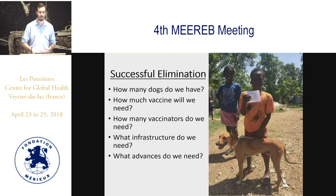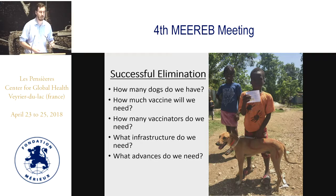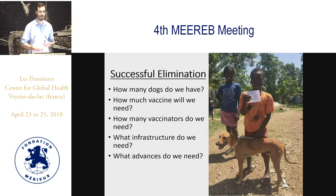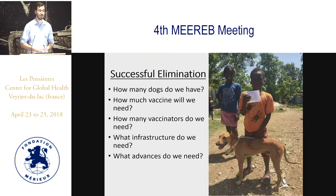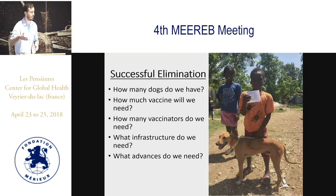We've heard it time and again from different countries that they purchase 100,000 doses of vaccine. Why? Well, that's because that's how much they buy every year. That's not based on any facts or figures about their dog population or about reaching that 70% coverage. How many vaccinators do we need? This is the human resource component also. We need to buy the vaccine, but how is that vaccine going to get into the animals? We need vaccinators on the ground who can then do this.